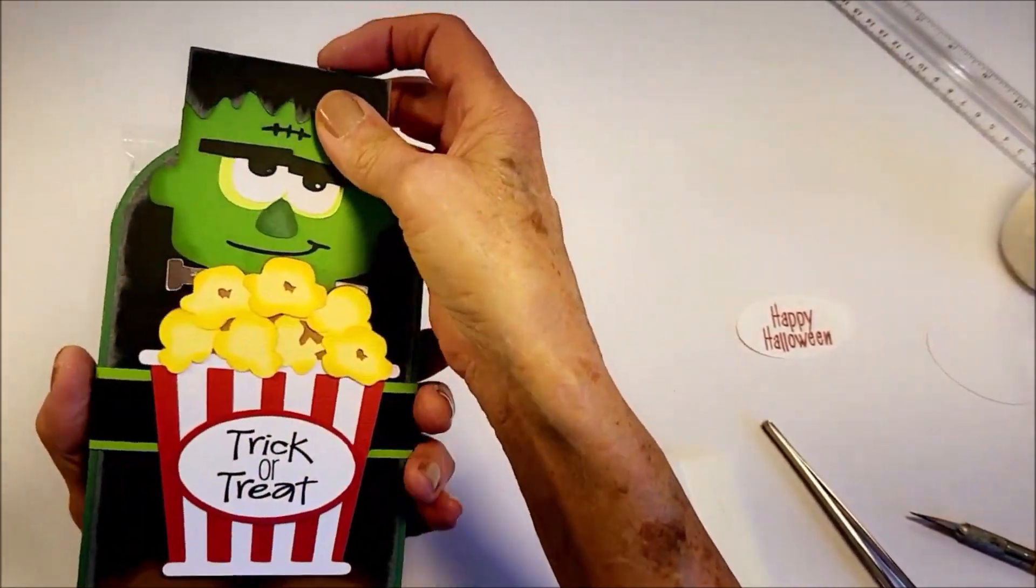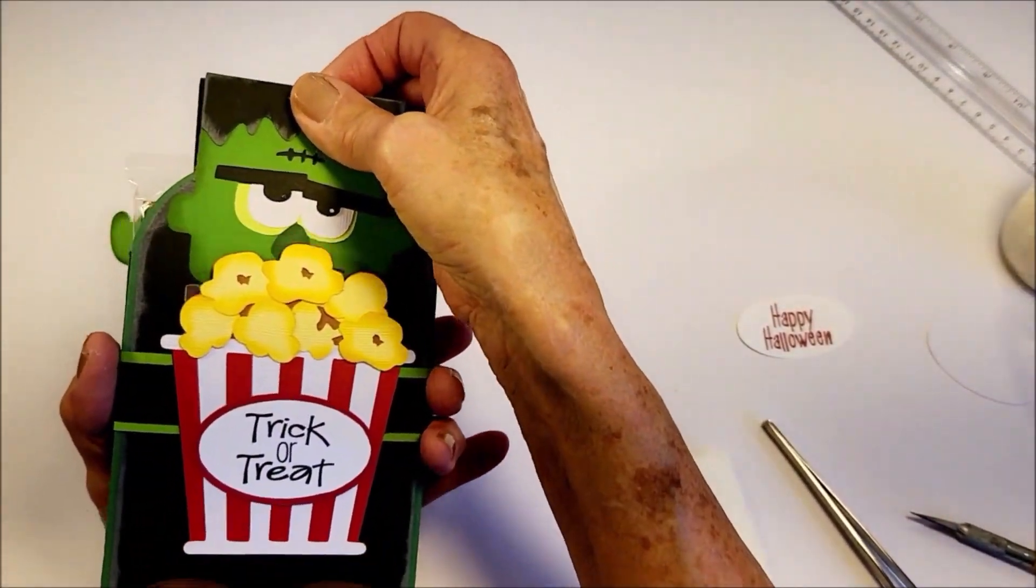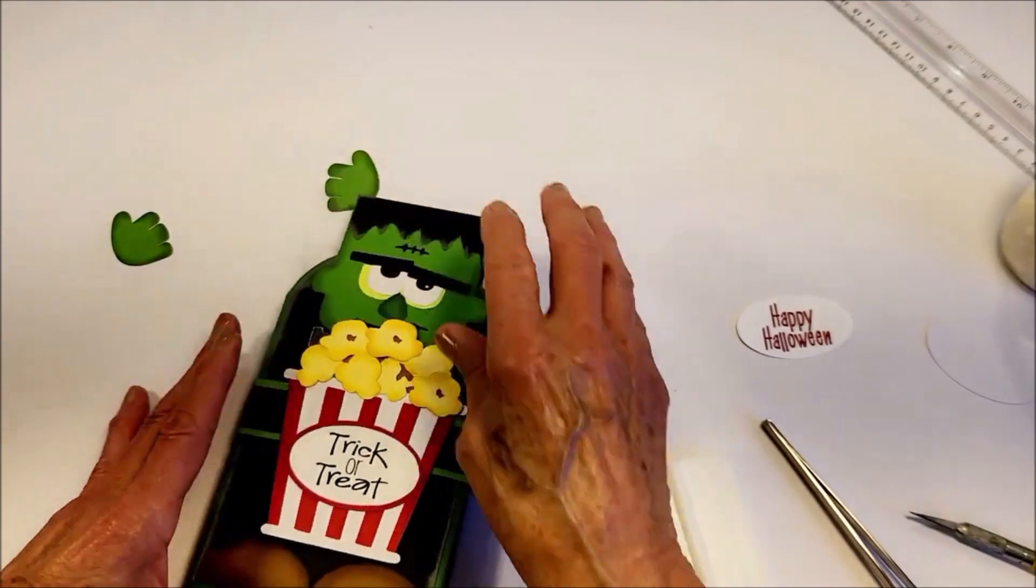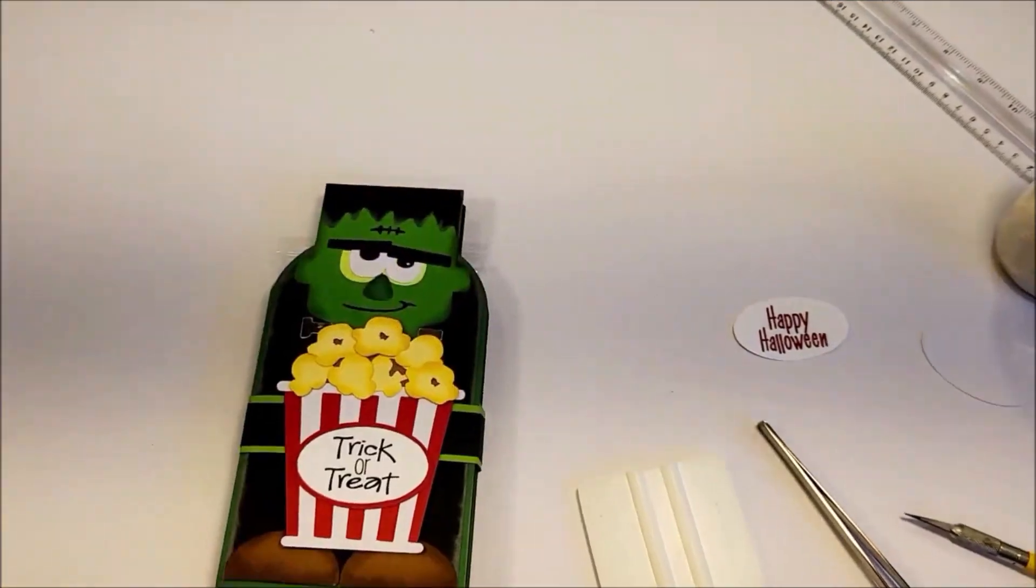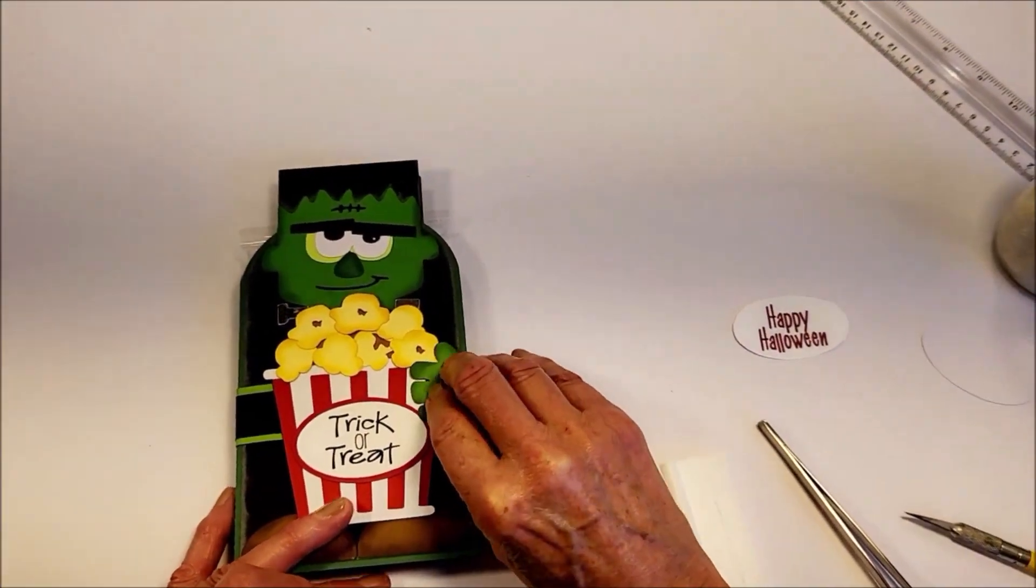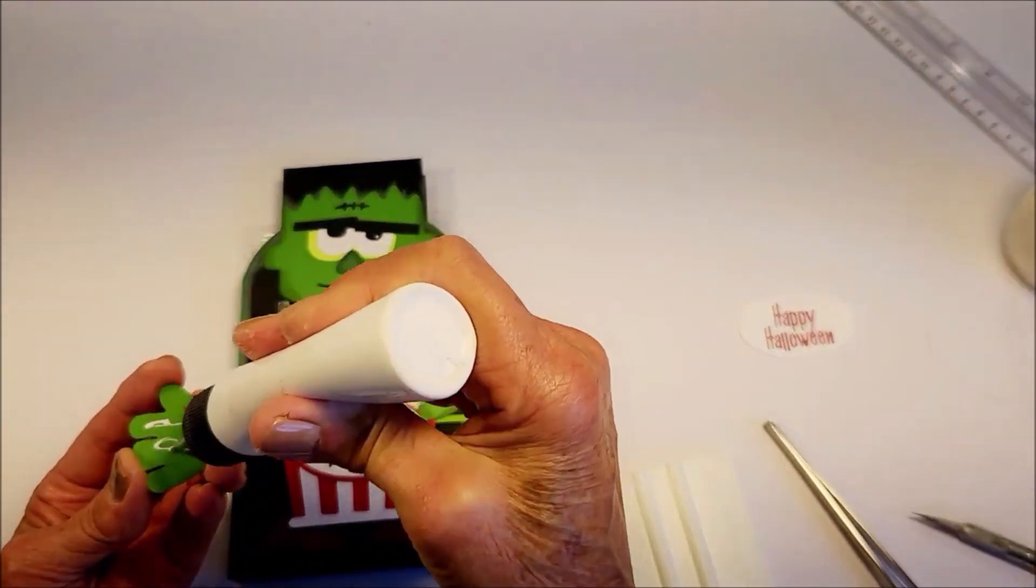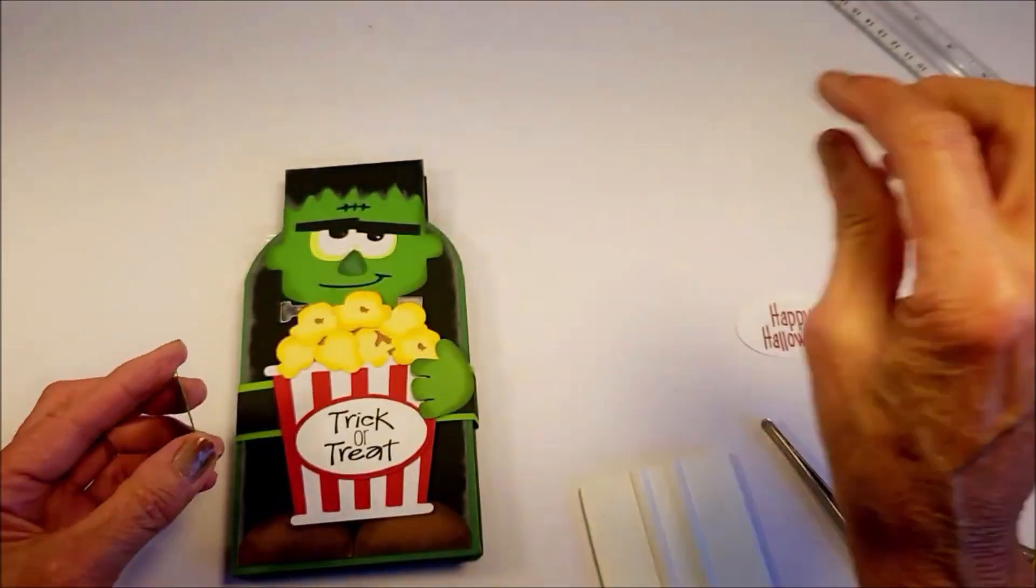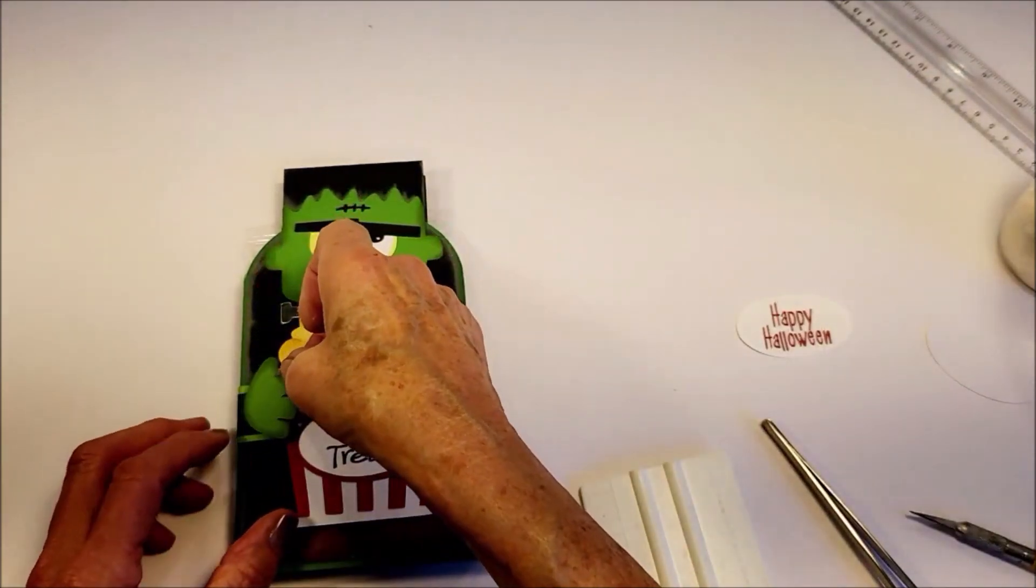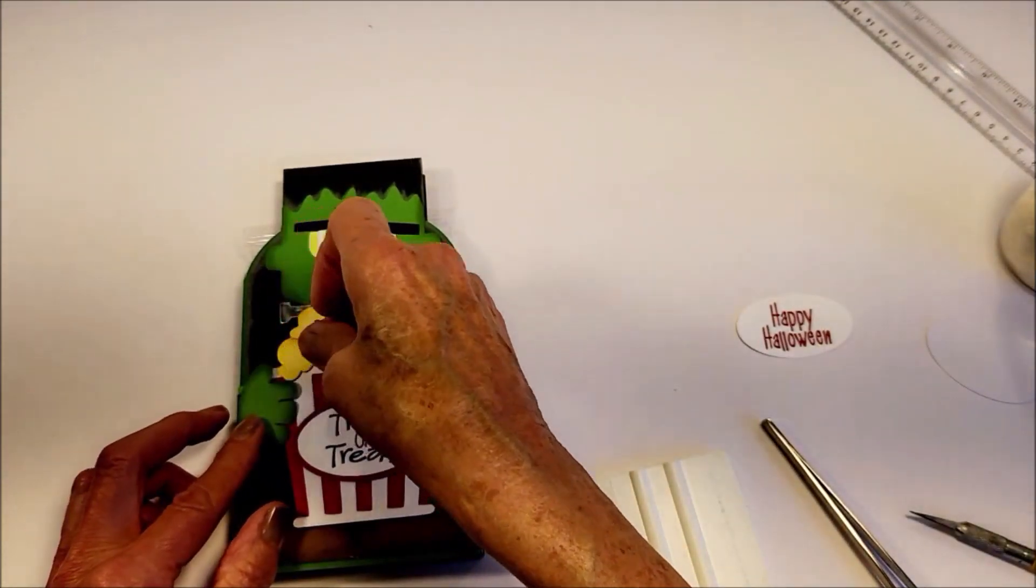And then now you can see that can slide on and off easily. And now I'm ready to add his hands. So we're just going to add them right on to the belly band. A little bit of glue in the middle of the hand there and then just place it where you think it looks good.